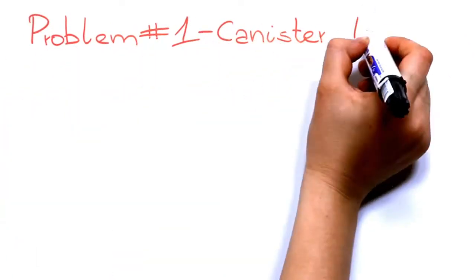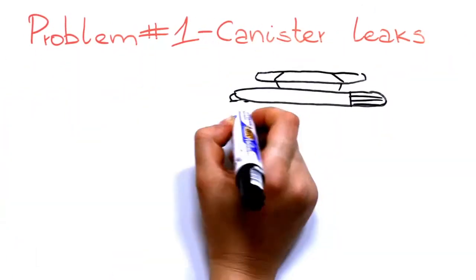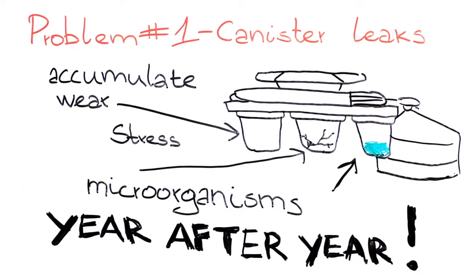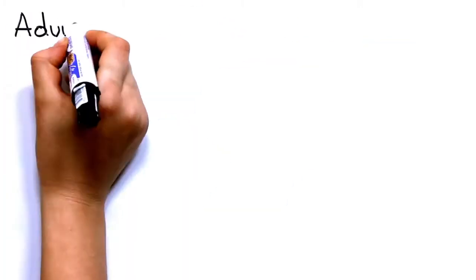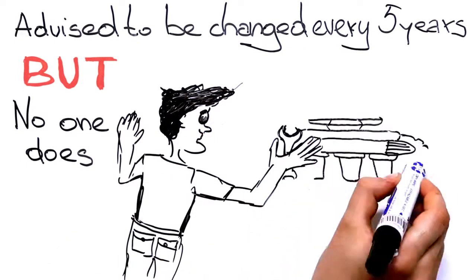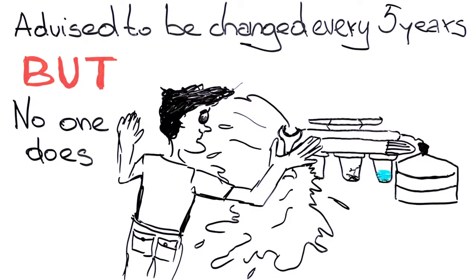Problem number one, canister leaks. Canister filter housings accumulate wear, stress, and microorganisms year after year. Only the filter element gets changed, not the filter housings. Those systems advise owners to change those housings every five years, but no one ever does until they leak or burst, causing a flood.